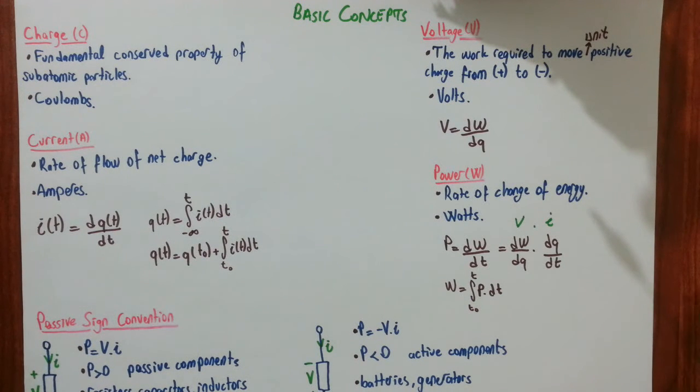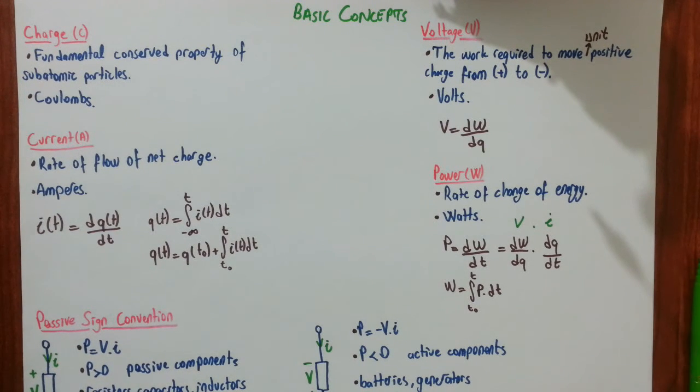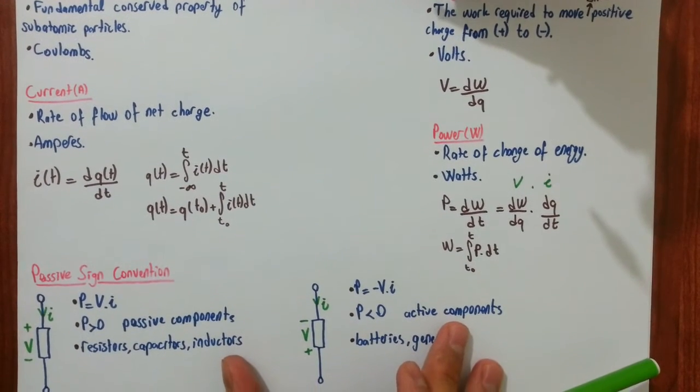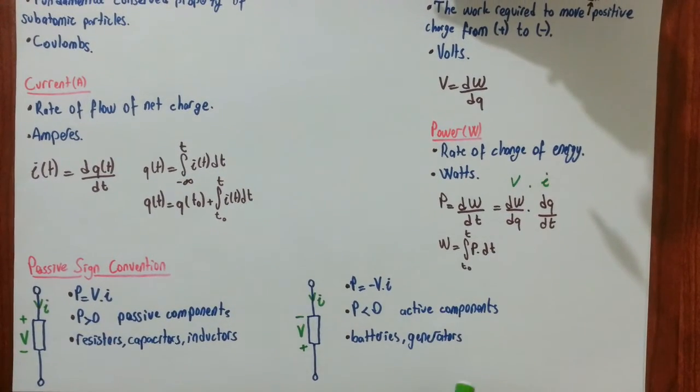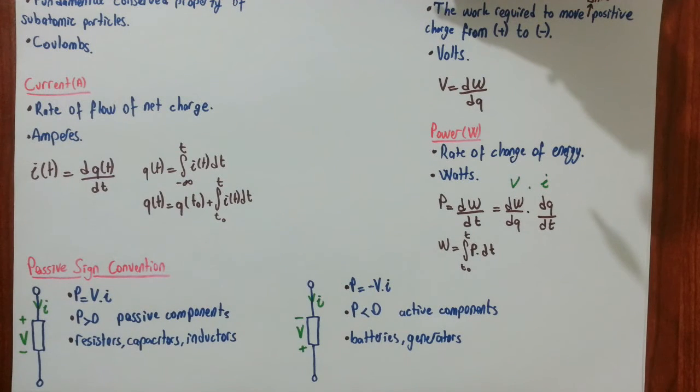Actually, in circuits, some components supply power to the circuit. And some components consume power in the circuit. And power is conserved in a circuit. So, to interpret this fact in mathematics, we use passive sign convention.